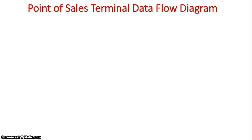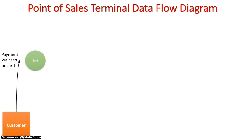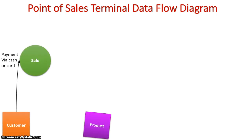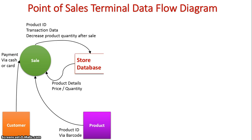We'll now look at it in the form of a data flow diagram. We start off with the customer completing their sale. The products get scanned via their barcode, and it all goes through the database. All the quantities are reduced, all the prices are added together, and the customer pays for it and receives a receipt of the transaction.